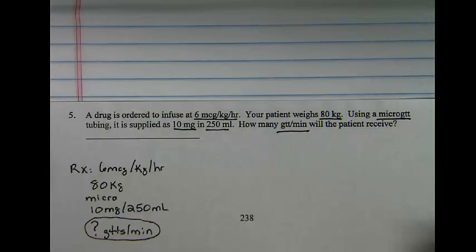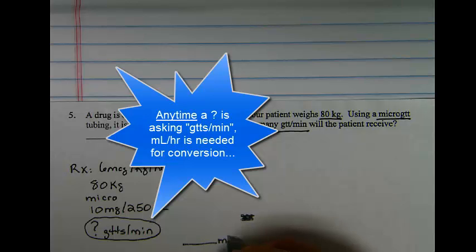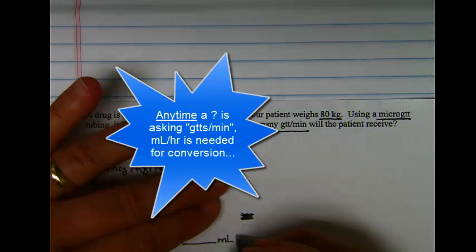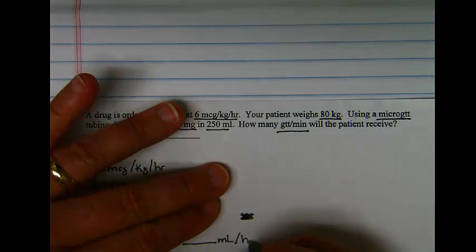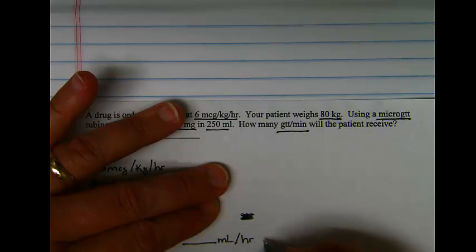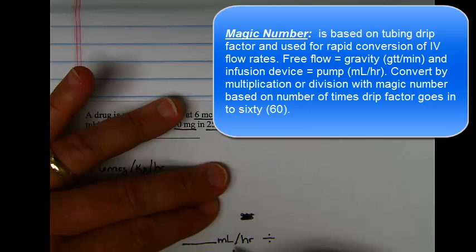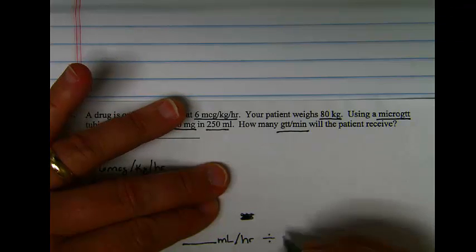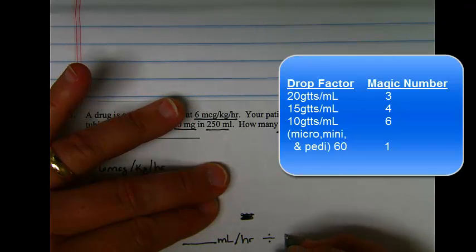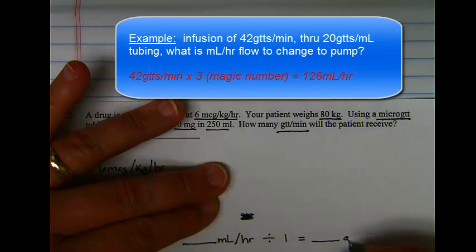To begin, in order to solve any question asking for a drop per minute flow rate, we are going to take the milliliters per hour flow and divide it by the magic number, in this case which is 1, to get our drop per minute flow rate.